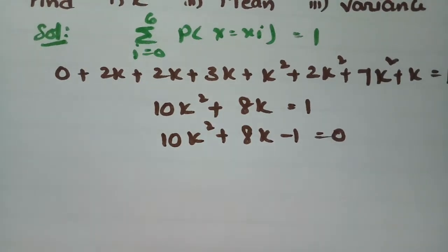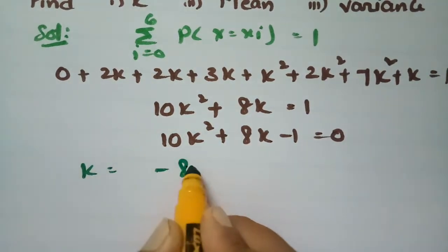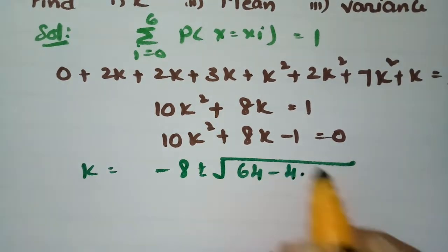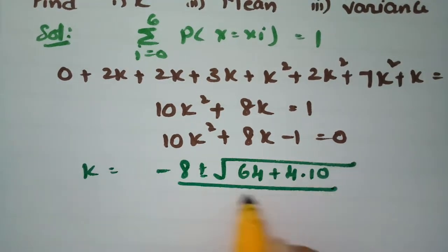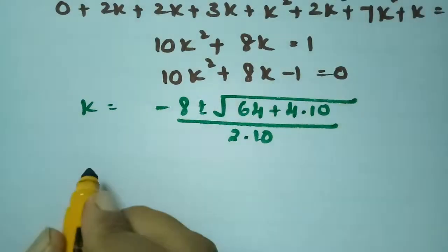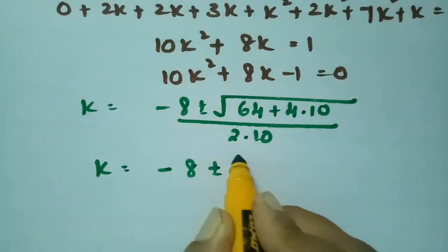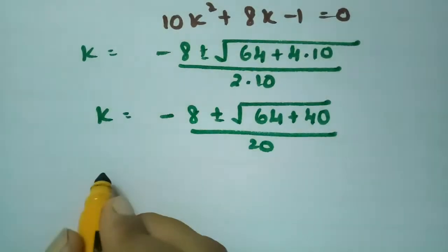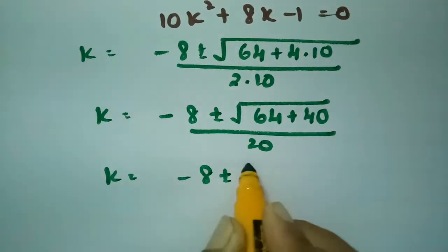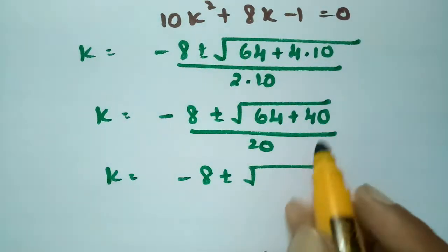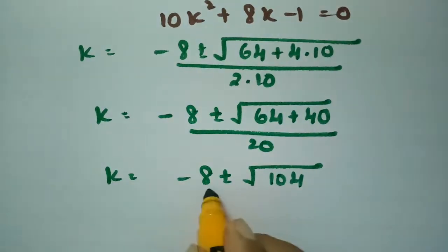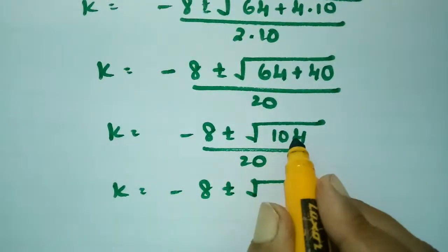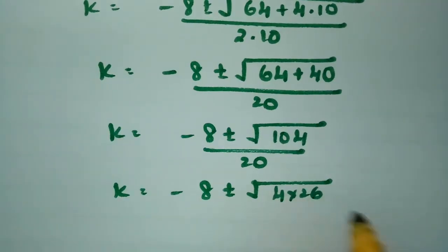To find the value of k, we apply the quadratic formula: k = (-b ± √(b² - 4ac)) / 2a. Here a = 10, b = 8, c = -1, so k = (-8 ± √(64 + 40)) / 20, which gives k = (-8 ± √104) / 20.